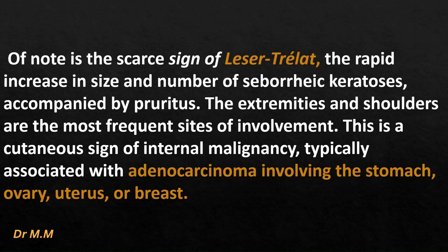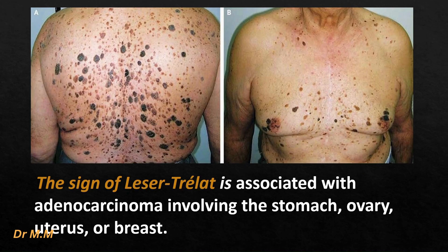The number of seborrheic keratosis increases with age. Note the sign of Leser-Trélat: the rapid increase in size and number of seborrheic keratosis accompanied by pruritus, with the extremities and shoulders being the most frequent sites of involvement, is a cutaneous sign of internal malignancy, typically associated with adenocarcinoma involving the stomach, ovary, uterus, or breast.